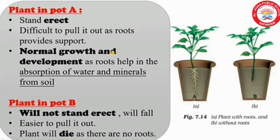Observe the plants after a week. Are both plants healthy? No. We can see that the plant in pot A stands erect and it is difficult to pull it out as roots provide support, and it shows normal growth and development. But the plant in pot B will not stand erect, will fall, is easier to pull out, and the plant will die as there are no roots.